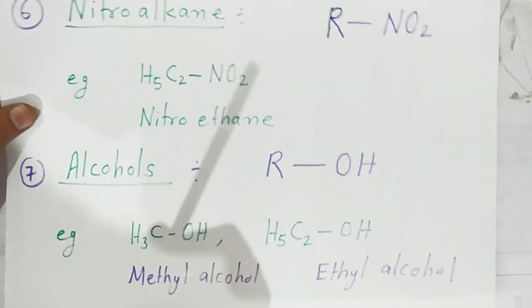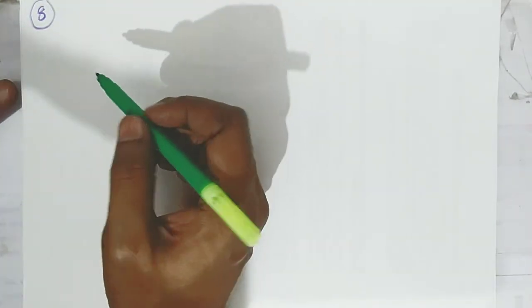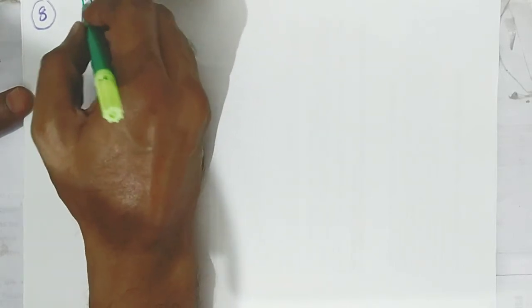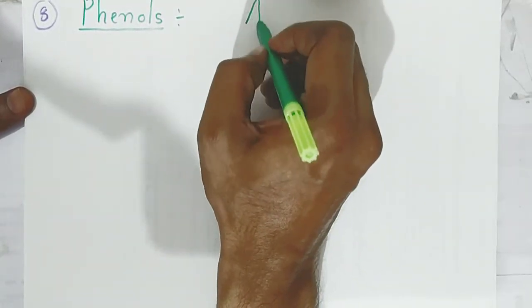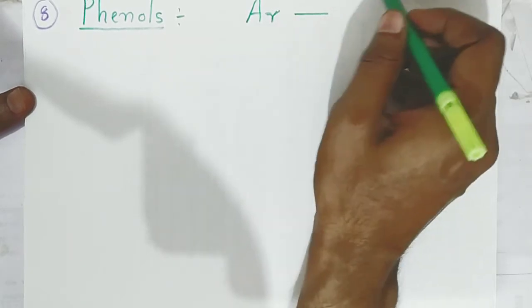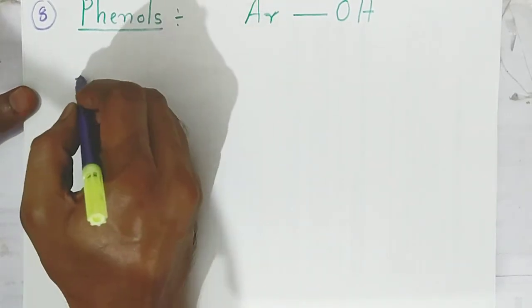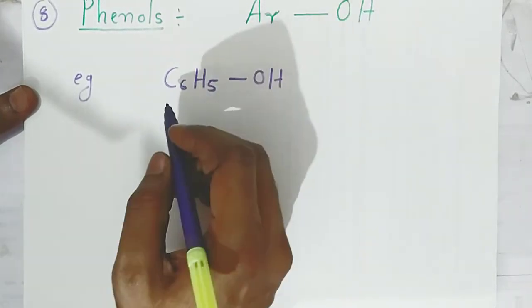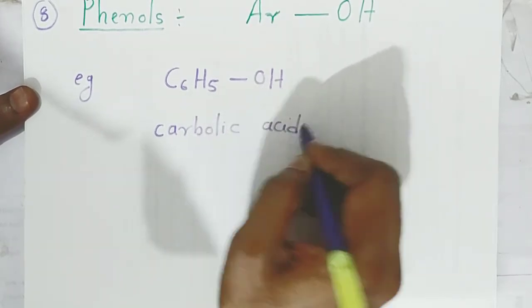The eighth functional group is phenol. When the hydrogen of the benzene aromatic ring is replaced by a hydroxyl group (–OH), we call it phenol. A very famous example is C6H5OH, which is phenol, also called carbolic acid.